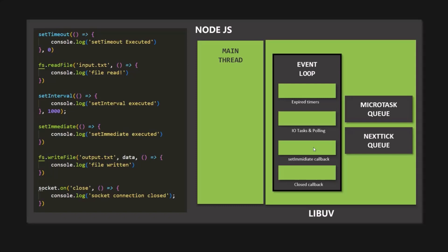Once all four phases of the event loop have executed, one cycle of the event loop is complete. Each cycle is called a tick. Once a tick is complete, Node.js decides whether the event loop should continue with the next tick or the program should exit. Node.js simply checks if there is any timer or I/O task still running in the background. If there are none, Node.js exits the application. But if there are timer or I/O tasks still running, Node.js continues running the event loop and the next tick starts.